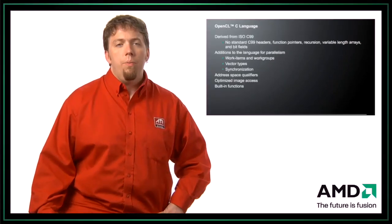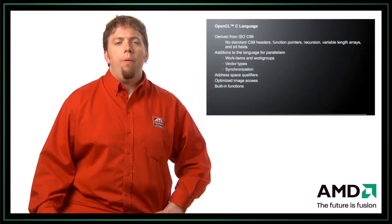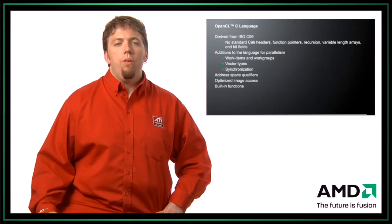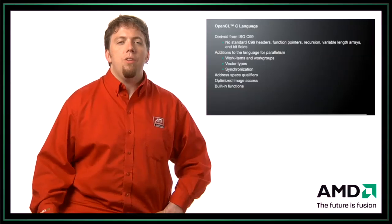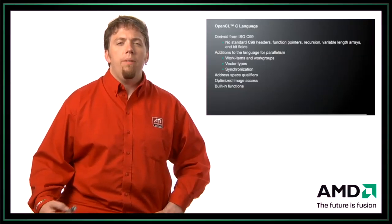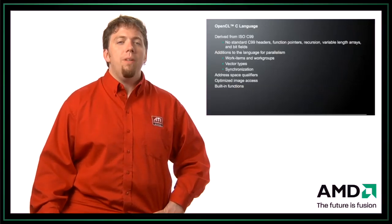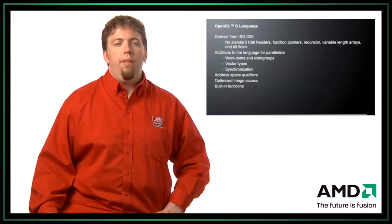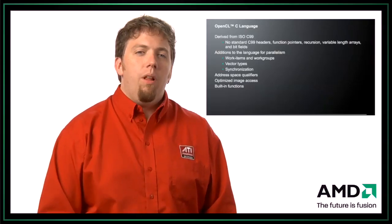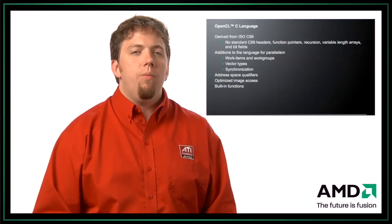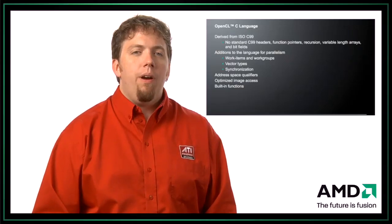There are actually some additions to OpenCL C though, and these additions were made to help out with parallelism. The first thing is that there are work item functions and work group functions used when writing your application, so you know what work item you are and what work group you're in. Those are built-in intrinsics in the language. There are also explicit vector types, functions for handling synchronization, and address space qualifiers. OpenCL has different address spaces to allow you to share memory between work groups and use the best memory for the job, so you can write very efficient parallel code.